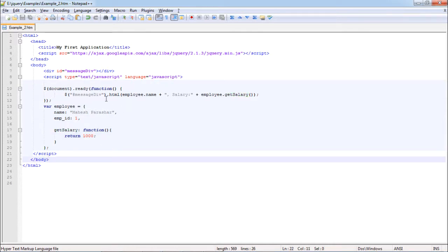So when document ready function is available, we have message div HTML which reads the object values employee.name and salary is printed as employee.get salary. Here is the method code and here it is property.